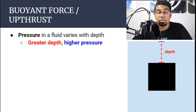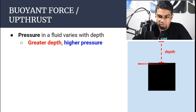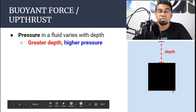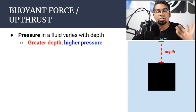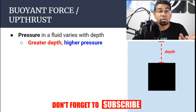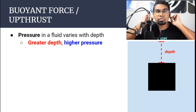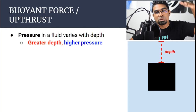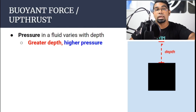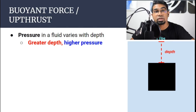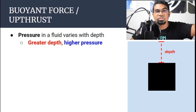Let's look at how this buoyant force forms. The buoyant force, also called the upthrust, forms due to the difference in pressure at the top and at the bottom of the object. Pressure in liquids depends on depth. If you've ever been to a pool, you know that the deeper you go, your ears get more and more uncomfortable — that's because pressure becomes greater and greater as you go deeper. That's the relationship between pressure and depth.